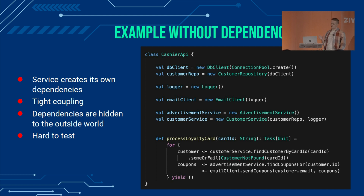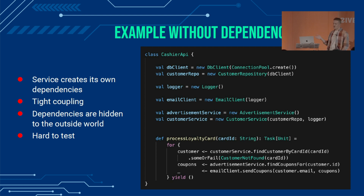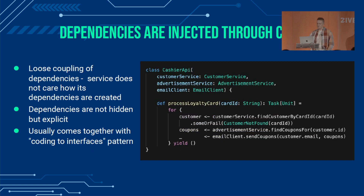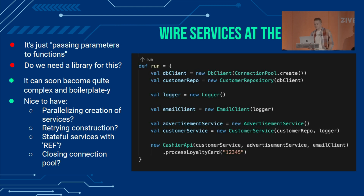In this example, we have a cache API that processes a loyalty card at the cash register — we are finding some coupons and then sending these discounts via email. This API creates its own dependencies, its own instances, and this is hard to test with tight coupling between the service and its dependencies. What we can do is push all these dependencies to the constructor, but somewhere at the edge of our application, we need to wire up this dependency graph.